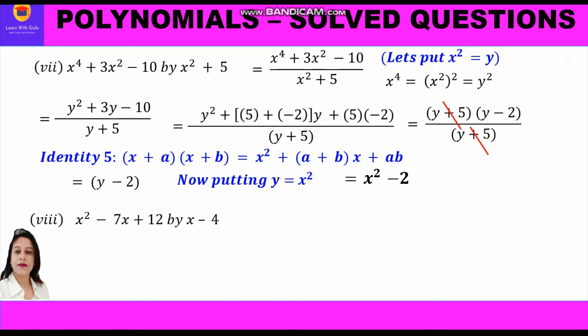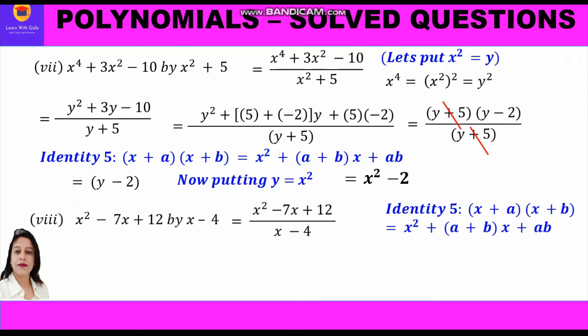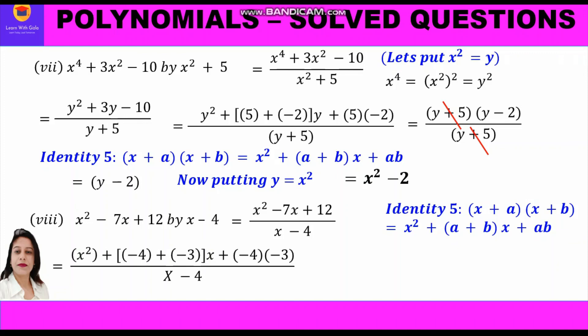The eighth part: divide x squared minus 7x plus 12 by x minus 4. We write in fraction form: (x² − 7x + 12) upon (x − 4). We factorize the numerator using identity 5. We need two numbers whose sum is minus 7 and product is 12. Minus 4 and minus 3 give minus 7, and minus 4 times minus 3 is plus 12. So a equals minus 4 and b equals minus 3.